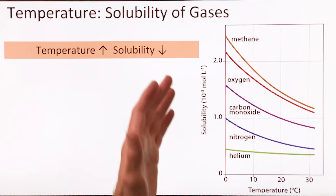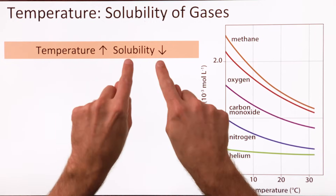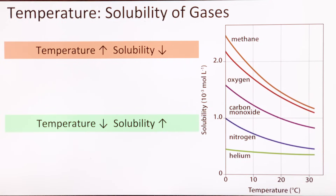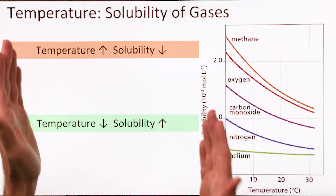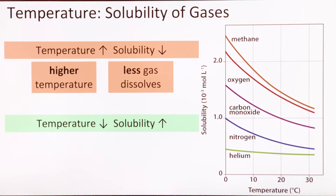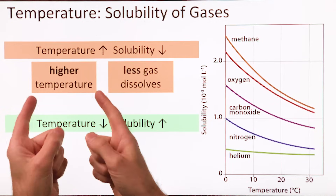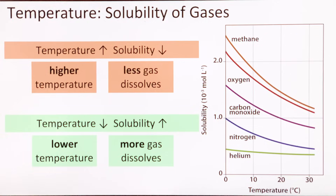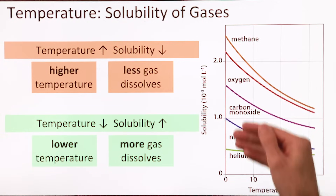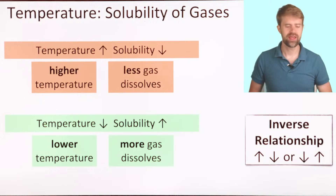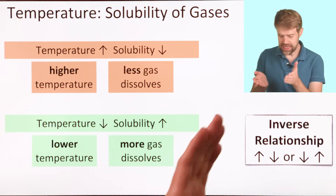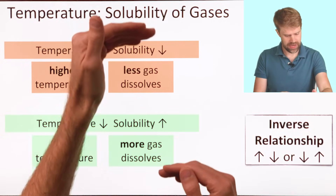Let's use this graph to look at the trend a little deeper. As we increase the temperature, we decrease the gas solubility. And that also means that as we decrease the temperature, we increase the solubility. Here, solubility and temperature move in opposite directions. It can also be helpful to think about these trends in terms of the amount of gas that can dissolve: at higher temperature, less gas can dissolve, and at lower temperature, more gas can dissolve. It's worth mentioning that this is pretty much always true — we don't really have the exceptions that we saw for solids. We call this an inverse relationship: as one goes up, the other goes down, and vice versa.